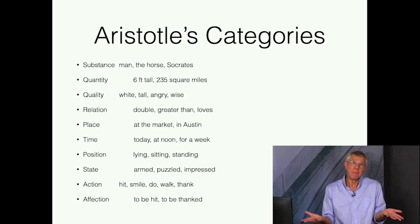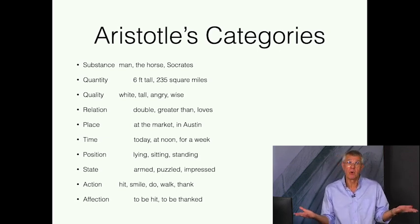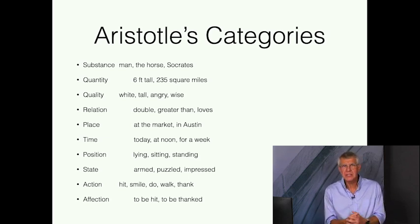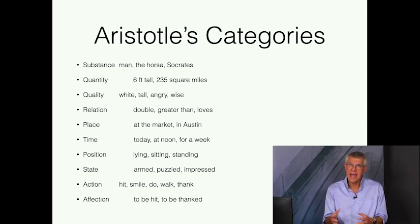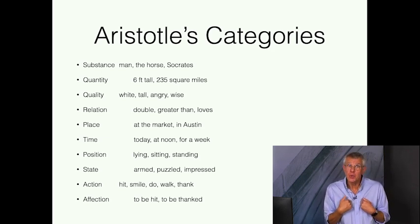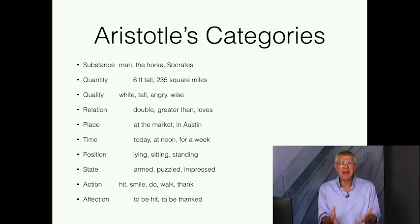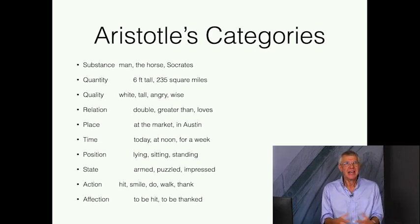Then we have places like at the market or in Austin; times like today at noon, for a week; positions like lying, sitting, standing; or states like being armed, being puzzled, being impressed. We have actions like hit, smile, do, walk, thank; and then affections — things happening to you — to be hit, to be thanked. These are the basic categories, but Aristotle gives them without much explanation at first.